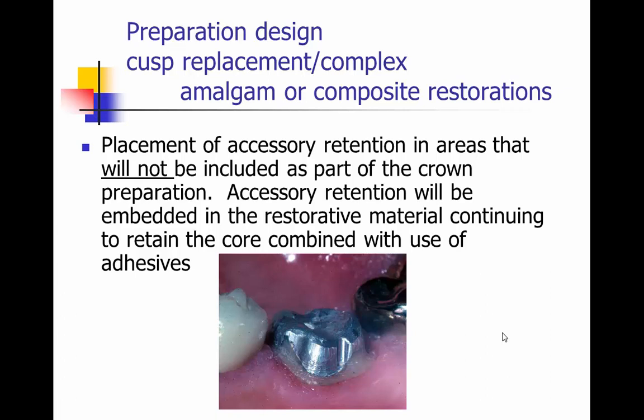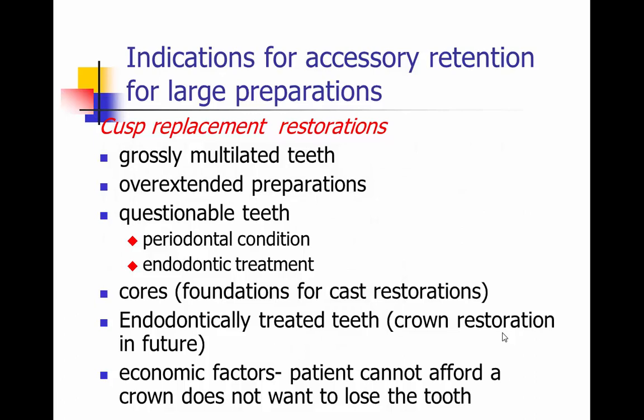Also, we need to know where we can place accessory retention for a core of this size so that it won't be included as part of our crown preparation. It would be a shame if, when we did our crown preparation, any retention was removed — for example, a pin placed where we do a facial shoulder. So we need to consider what will help keep that core in when we do our final preparation. It's much more complex than placing a matrix and just placing a core; it really relies upon planning and picturing what the crown preparation will look like.